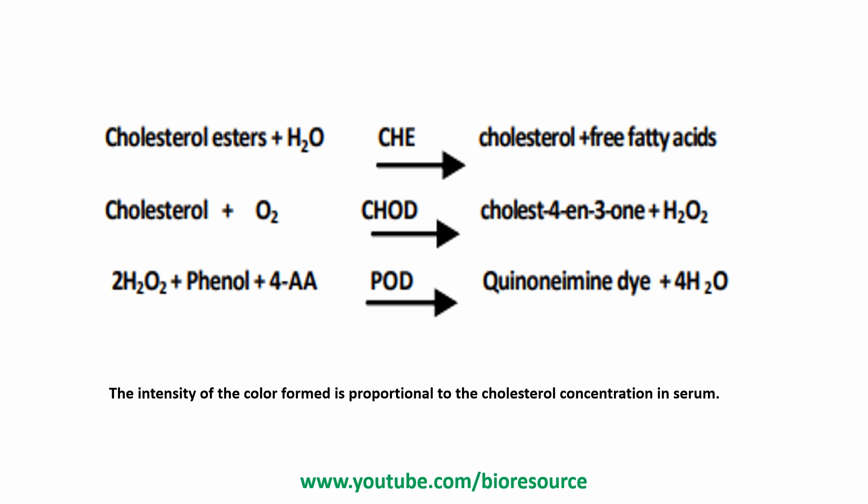Here you can see the cholesterol esters converted into cholesterol and free fatty acids, which in the presence of cholesterol oxidase are converted into cholestanone and hydrogen peroxide. This hydrogen peroxide reacts with aminoantipyrine to produce a colored dye, and the intensity of the color formed is directly proportional to the cholesterol concentration in the serum.